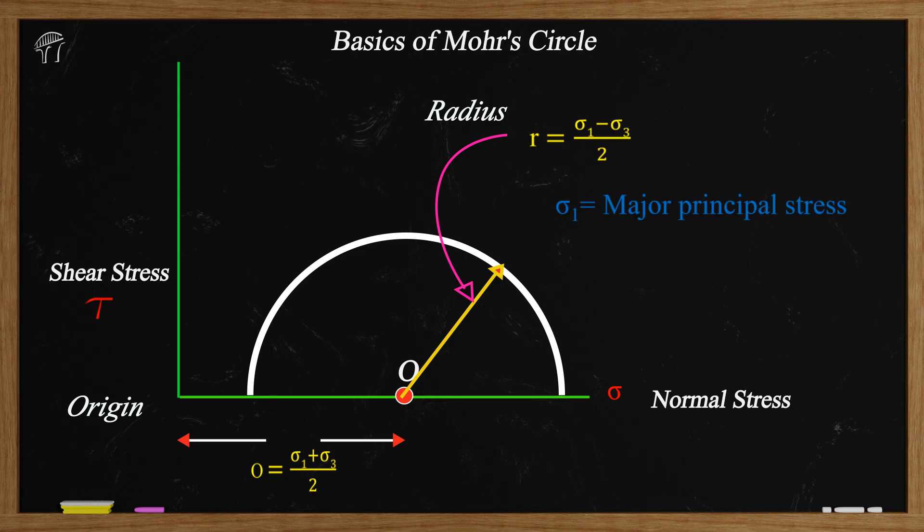Here sigma 1 is the major principal stress and sigma 3 is the minor principal stress. There is one more intermediate principal stress that is sigma 2 but that is out of our scope so we will not discuss that over here.